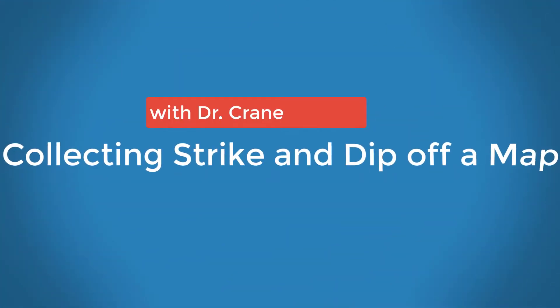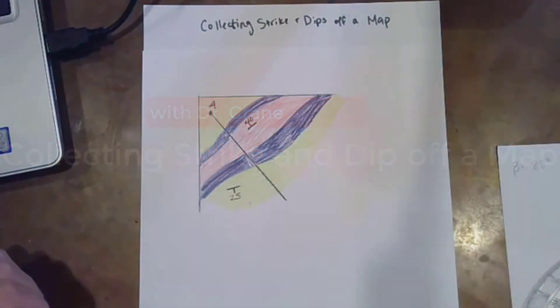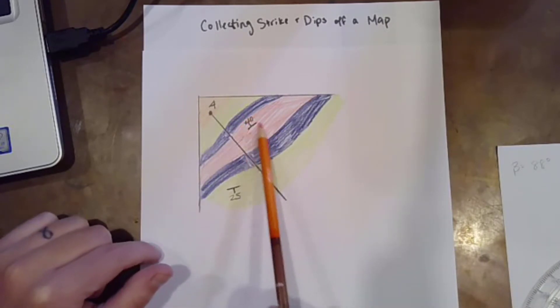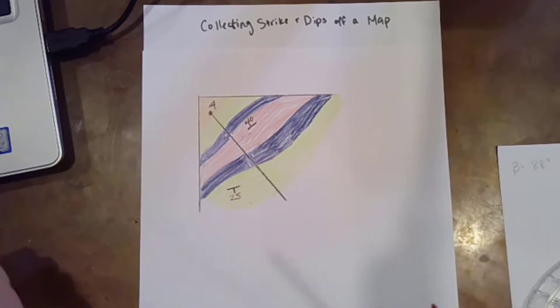In this video we're going to discuss how to collect strike and dips off of a map. I do have other videos on how to make a cross section, but this one specifically is going to focus on what you should do when you are looking at these strike and dip symbols and trying to transfer those to a cross section. So what you want to do is you want to look at the line that you've selected for making your cross section.